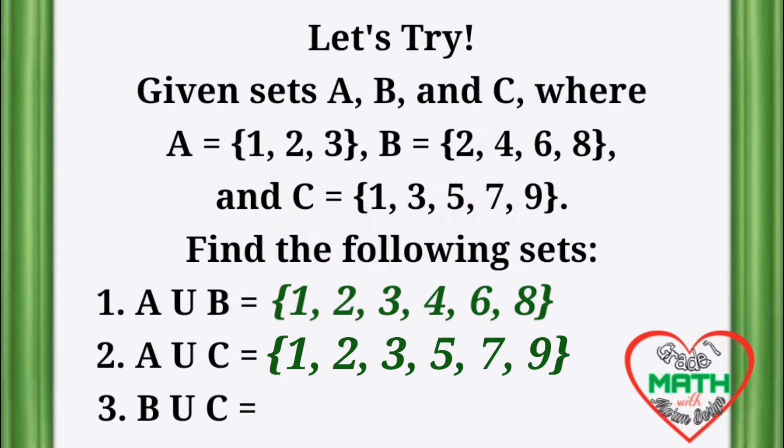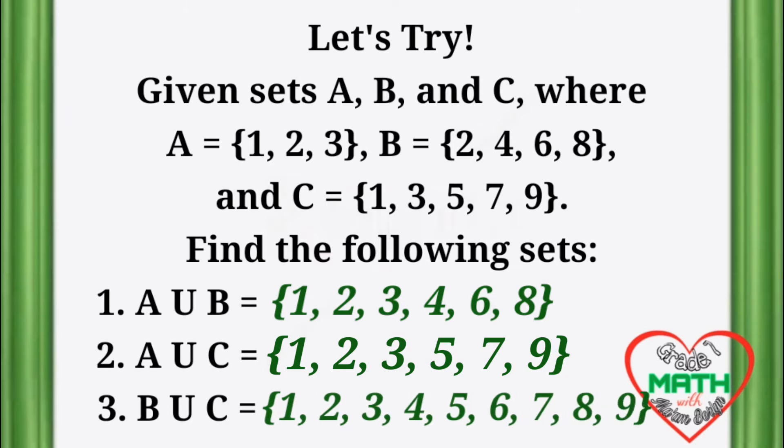For number 2, we have A union C equals {1, 2, 3, 5, 7, 9}. For number 3, we have B union C equals the elements {1, 2, 3, 4, 5, 6, 7, 8, 9}. These elements can be found in sets B or C or both.